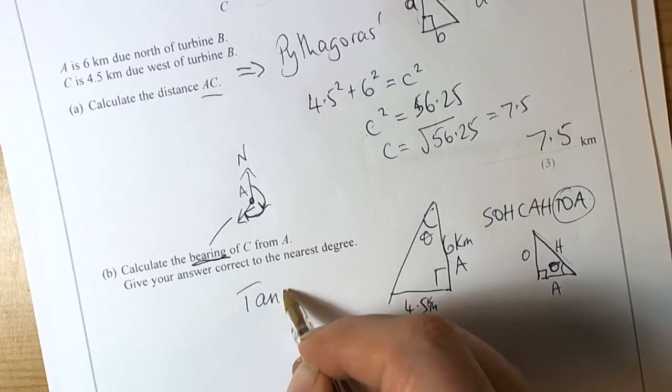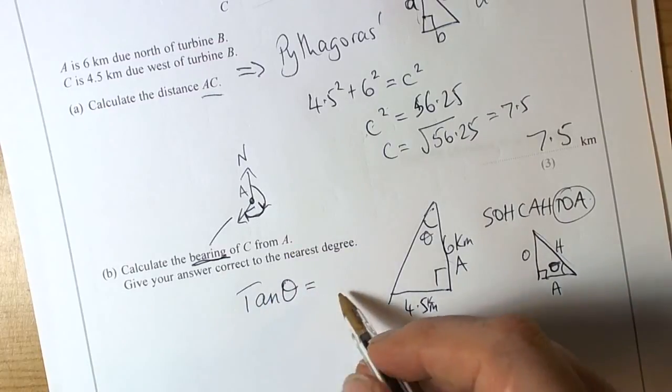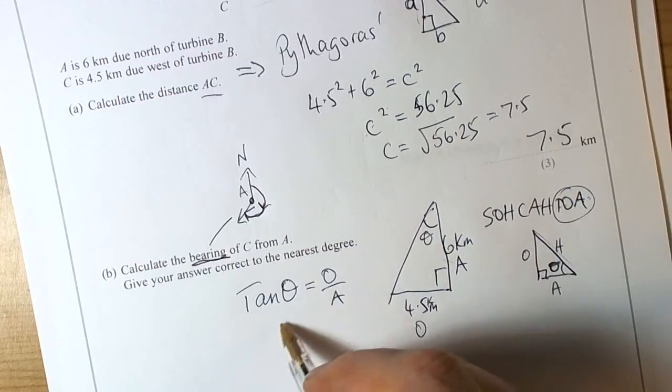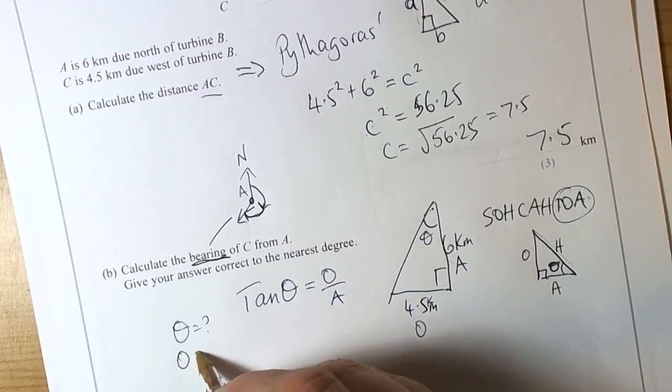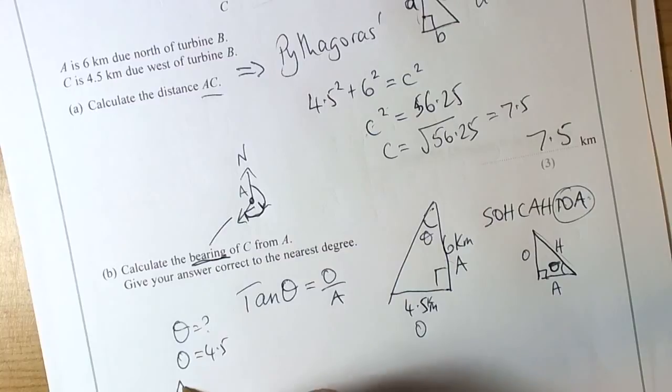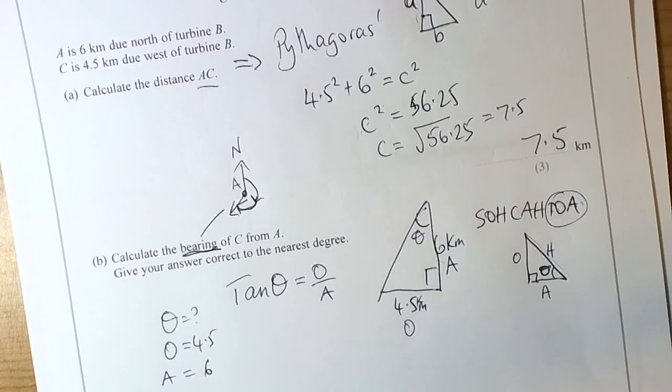So we are going to write tan theta, write the rule down. Tan theta is equal to the opposite length divided by the adjacent length, so O over A. Theta is what we need. O is given as 4.5 and A is given as 6. They have got the same units.